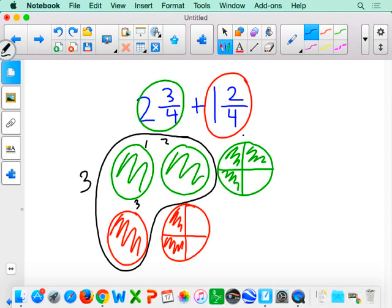Now let's take a look at my parts. I have 1, 2, 3, 4, 5 parts cut into fourths, so I have 5 fourths.